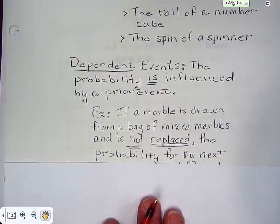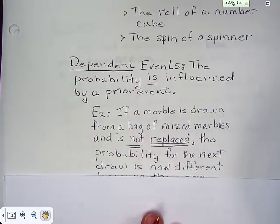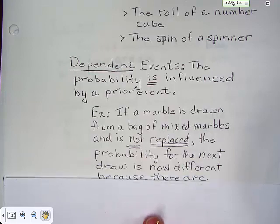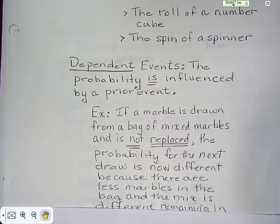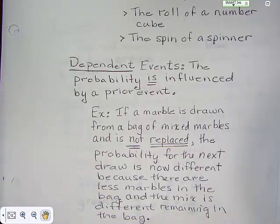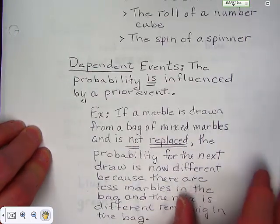Then, you draw another marble out of the bag. So, it's a different number of marbles in the bag. And depending on what you draw as far as the color, you may have eliminated some color choices out of that bag. So, because there are less marbles in the bag, and because the mix is different, you're going to be doing something different to figure out the probability of drawing marbles out of that bag.